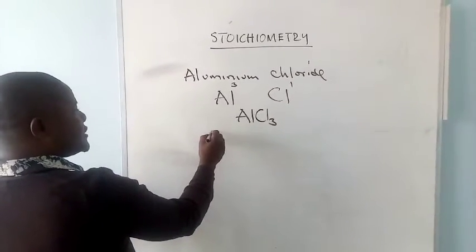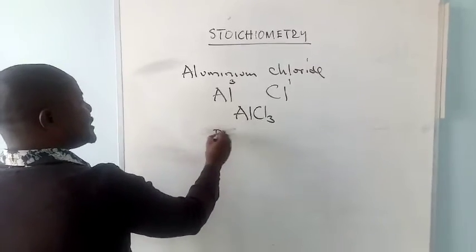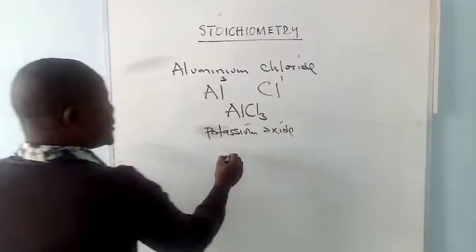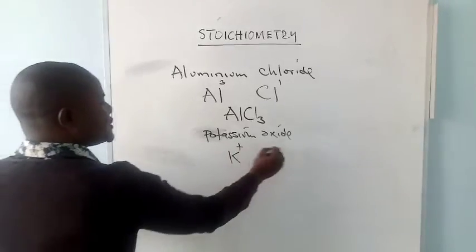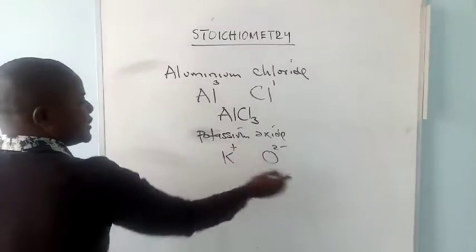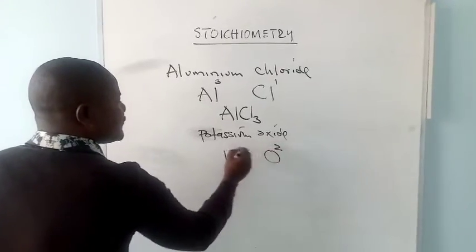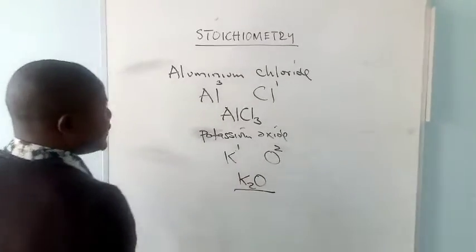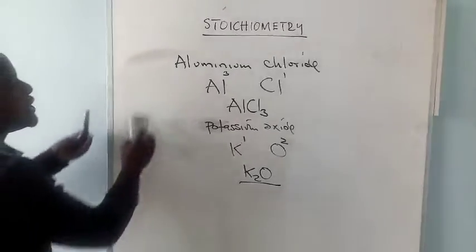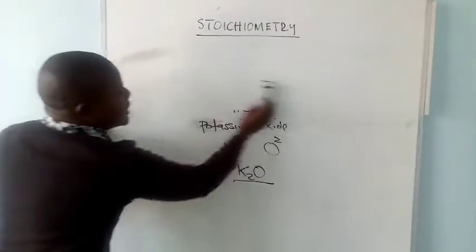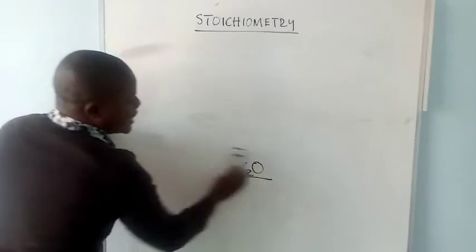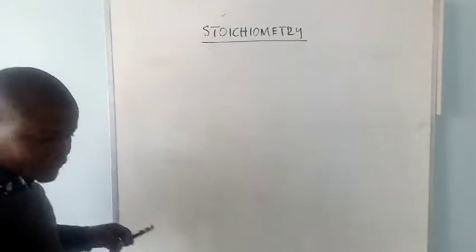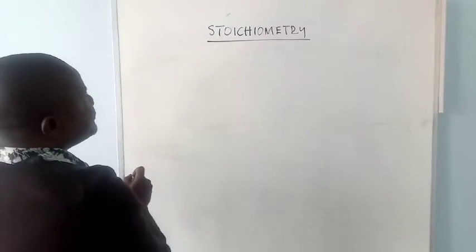Let's also look at potassium oxide. Potassium is K with a charge of +1, and oxide is −2. We swap the valences, but the two values cancel, giving us K₂O. There are also what we call transition elements or metals, which can form more than one positive charge.